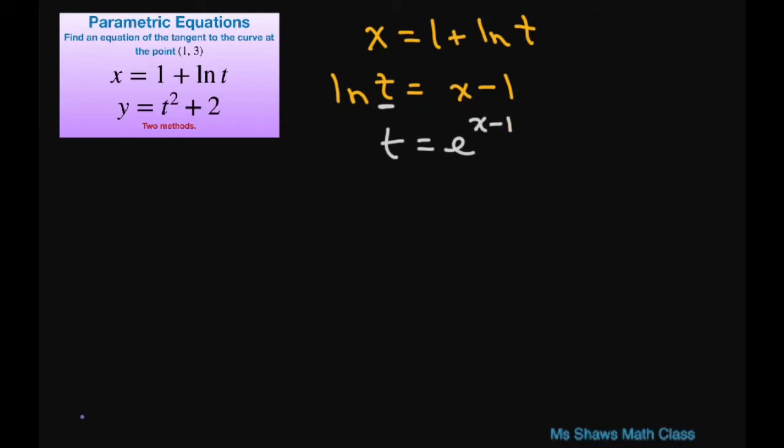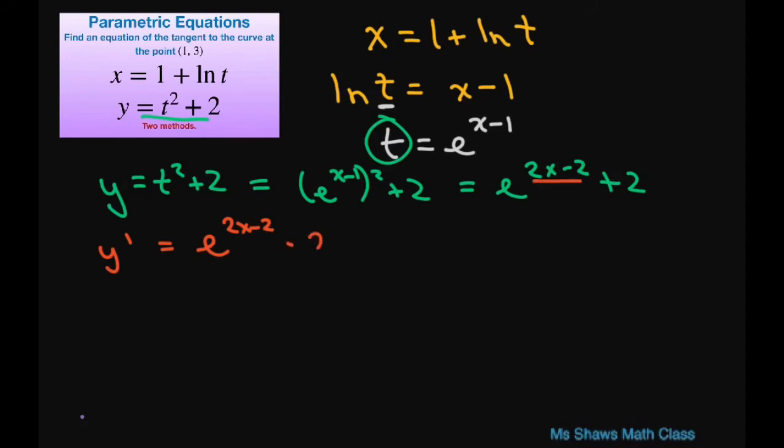So I'm going to substitute this t in for my y value. So if we have y equals t squared plus 2, then that's going to equal e to the power of x minus 1 squared plus 2, which equals e to the power of 2x minus 2 plus 2. Let's differentiate our y to find our gradient or slope and that's going to give me 2 times e to the power of 2x minus 2.